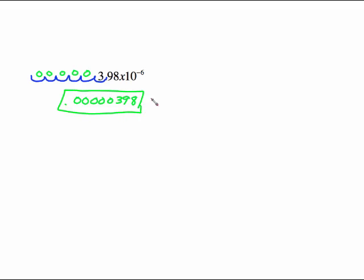So that's the simple stuff of scientific notation — either writing something in scientific notation, or taking it out of scientific notation and writing it in standard form.